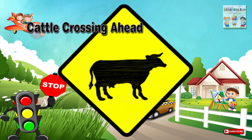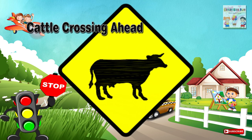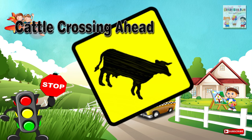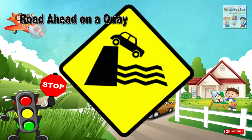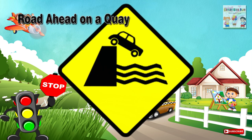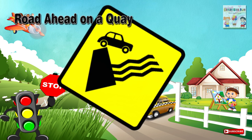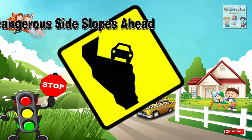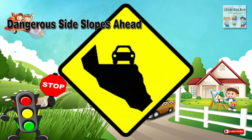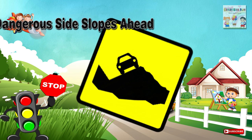Forty-one: Cattle crossing ahead — a place ahead where cattle and/or other animals may cross the road or may be found on the road. Forty-two: Road ahead on a quay — a place ahead where the road is on a quay, or a place where the side of the road drops deeply into a river, lake, water course, waterway, or sea. Forty-three: Dangerous side slopes ahead — a narrow road section ahead where the side slopes are dangerously steep.